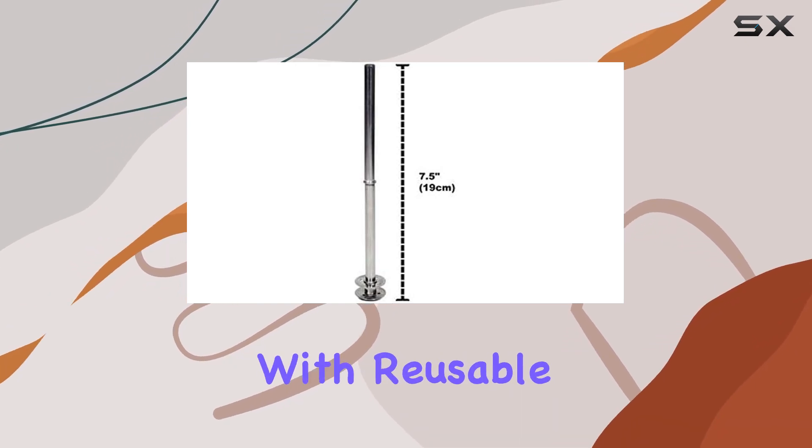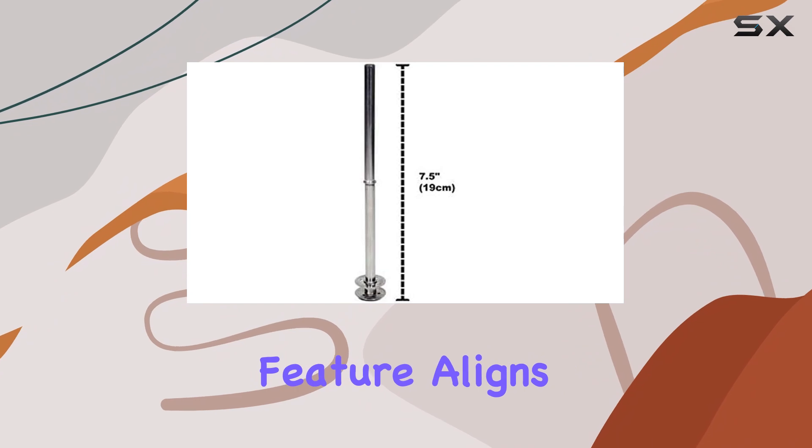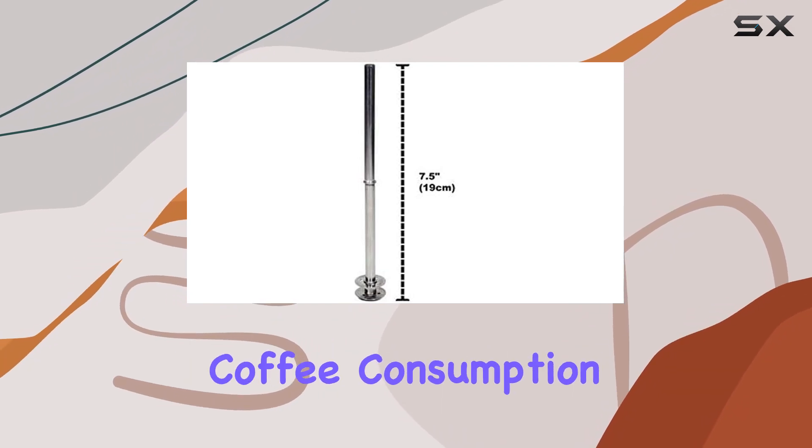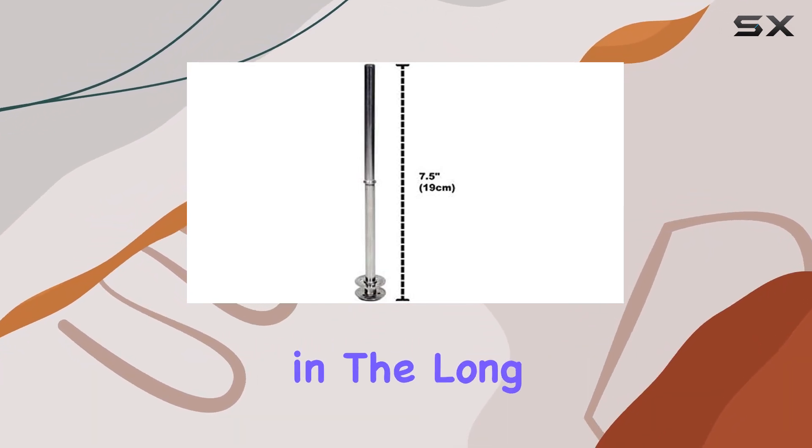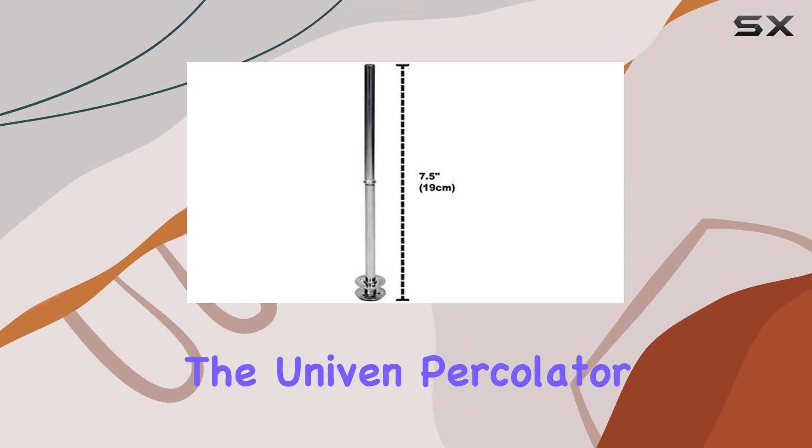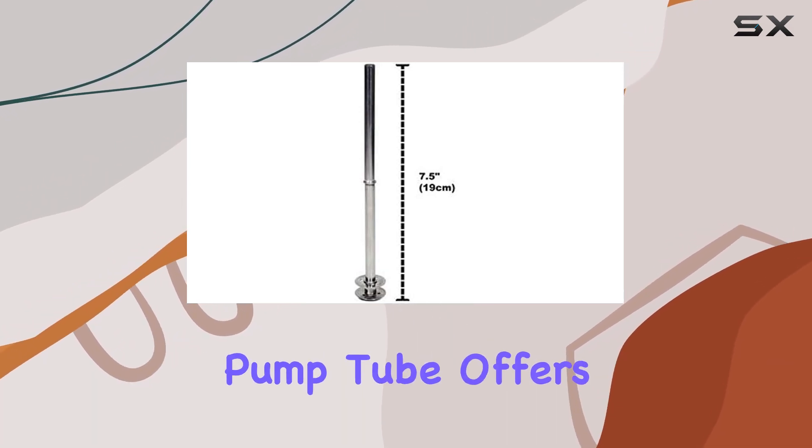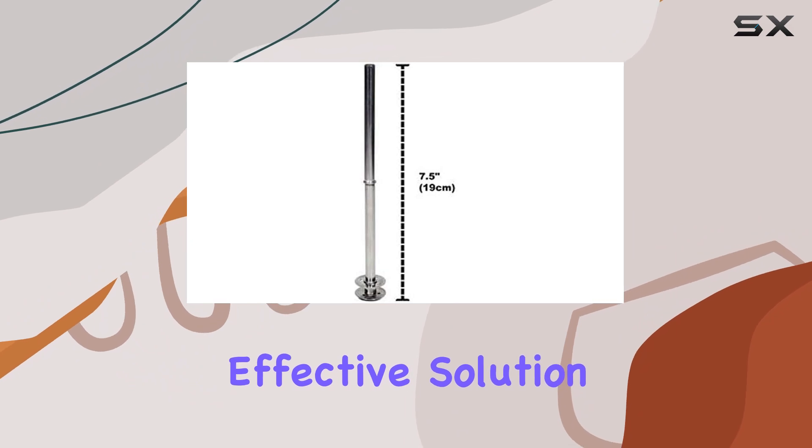This feature aligns with the growing trend of eco-friendly coffee consumption, reducing waste and saving money in the long run. In conclusion, the Univine percolator coffee maker pump tube offers a straightforward, effective solution.